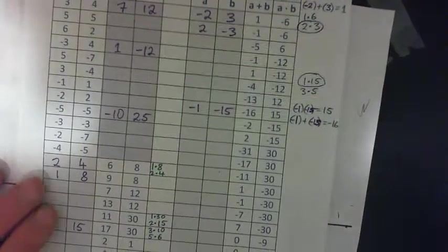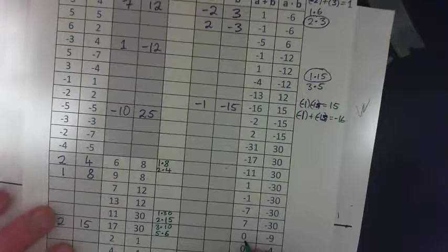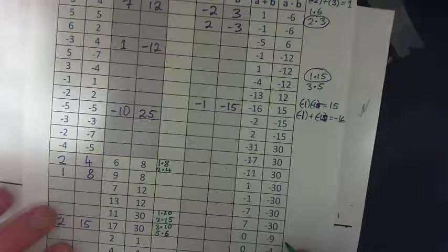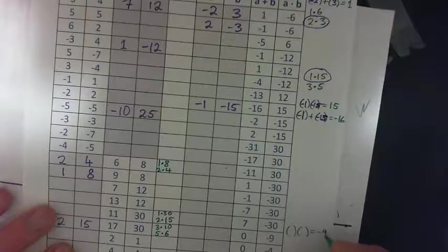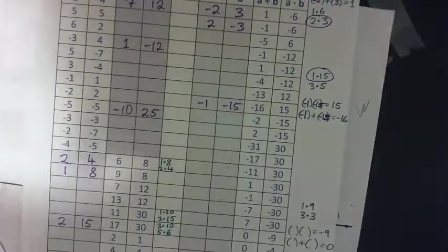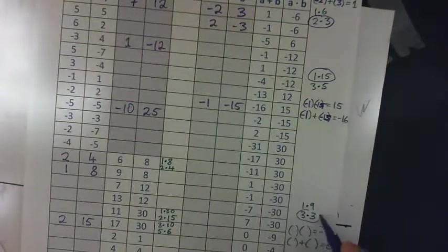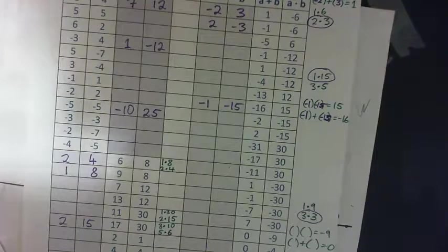What two numbers add to 0 and multiply to negative 9? They add to 0 and they multiply to give negative 9. List the pairs of factors of 9: 1 times 9, 3 times 3. Look at the 0 — if you take 3 and 3, they have a difference of 0. So what two numbers multiply to negative 9 but add to 0?